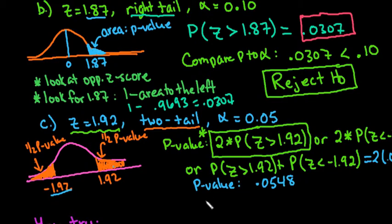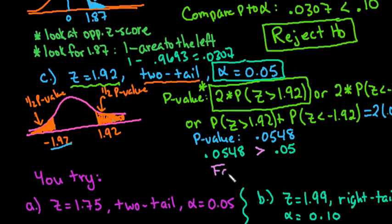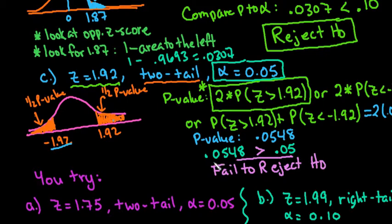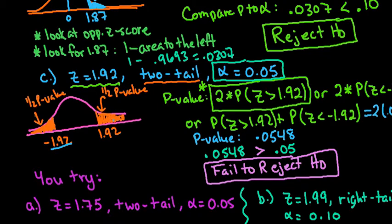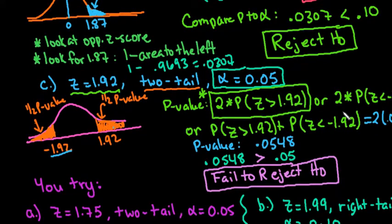Comparing 0.0548 to our alpha of 0.05, we can see that this time it is greater than. Any time the p-value is greater than alpha, we fail to reject the null hypothesis — the result isn't extreme enough for us to reject. It's really close, so it's important to determine your alpha level before you start. Had we used α = 0.10 as in the previous problem, we would have rejected. Always set the alpha level before the test to avoid the unethical practice of choosing it to get the results you want.